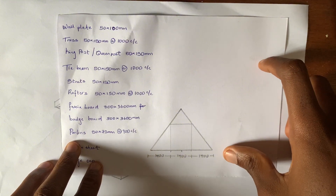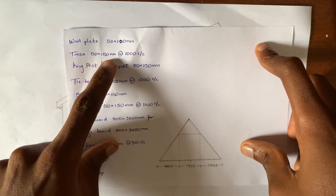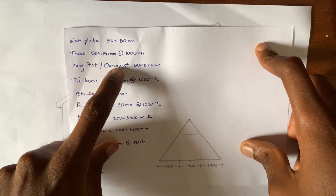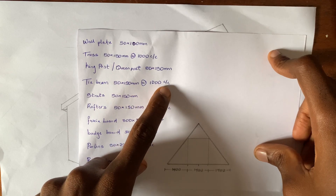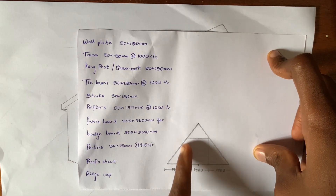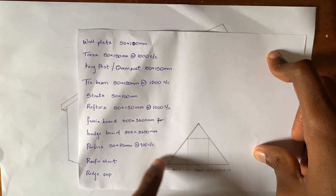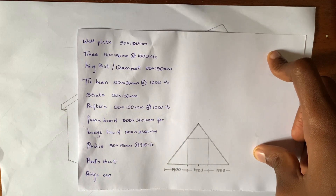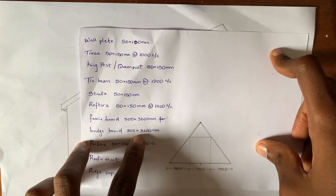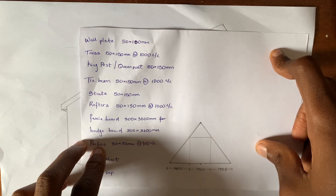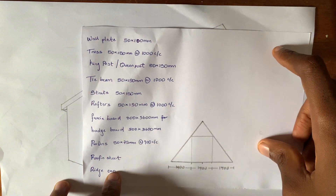These are the specifications: the wall plate we're going to be using is 50×100mm; the truss we're going to be using is 50×150mm; the queen post is 50×150mm; the tie beam is 50×150mm at 1000mm center to center. The fascia board is 300×3600mm; the barge board is 300×3600mm; the purlins are 50×75mm at 900mm center to center; then the roofing sheets and the ridge cap.